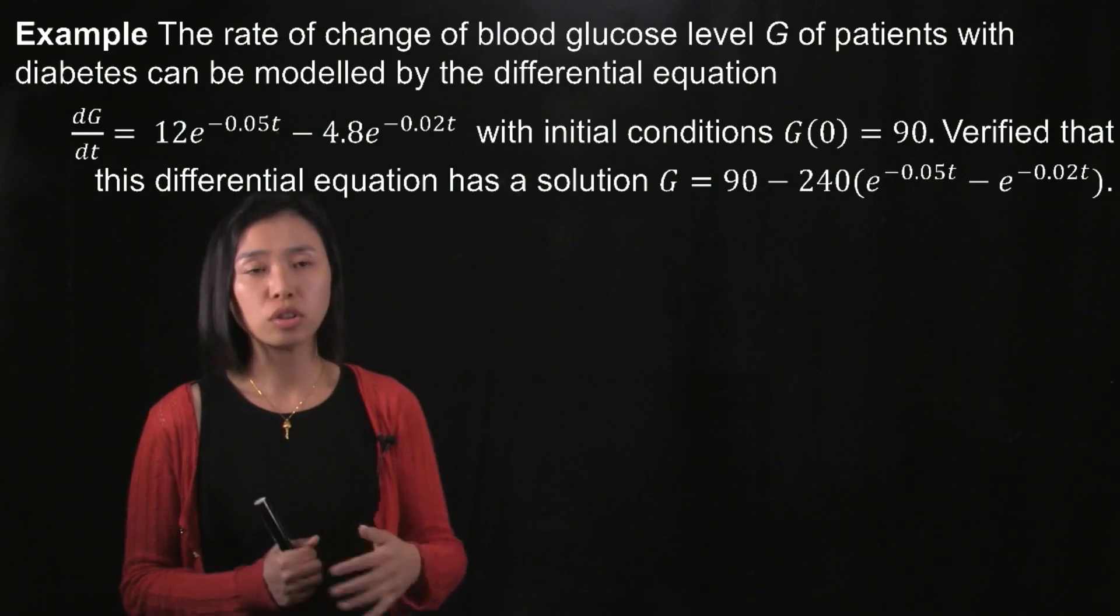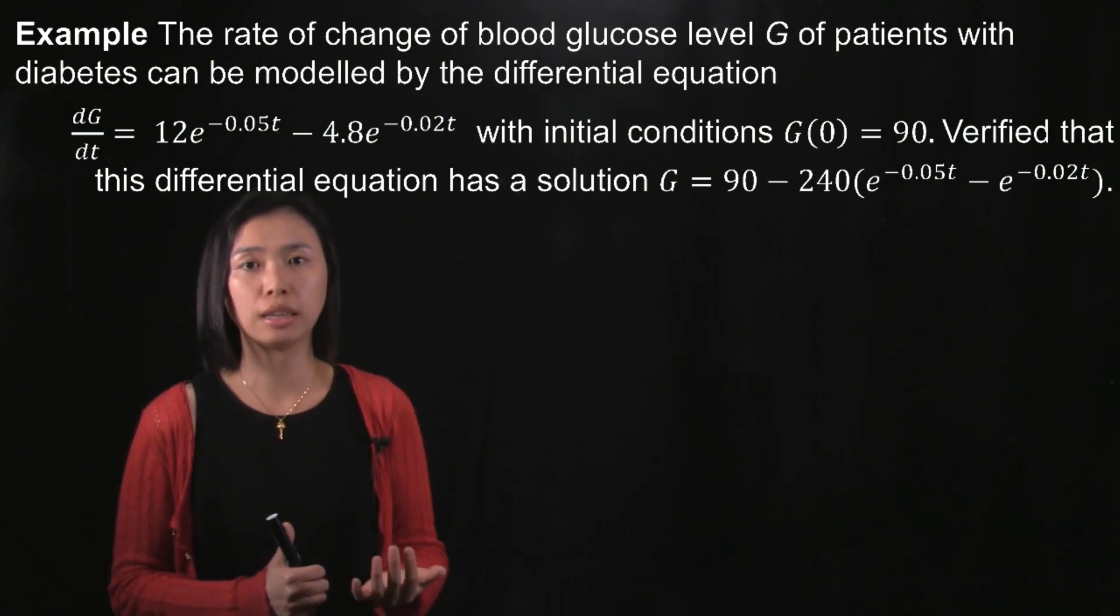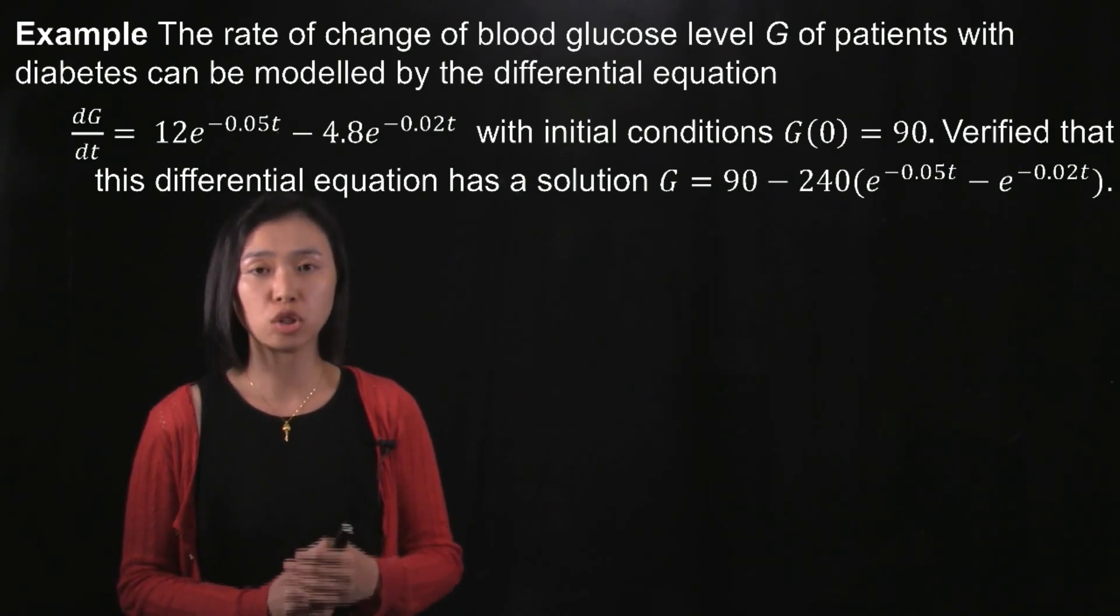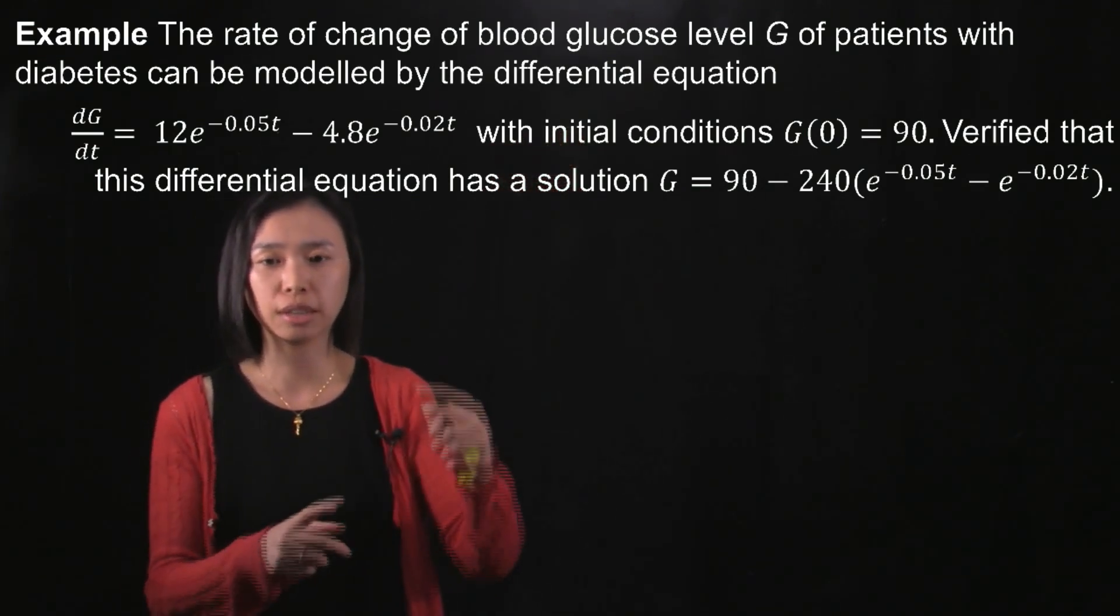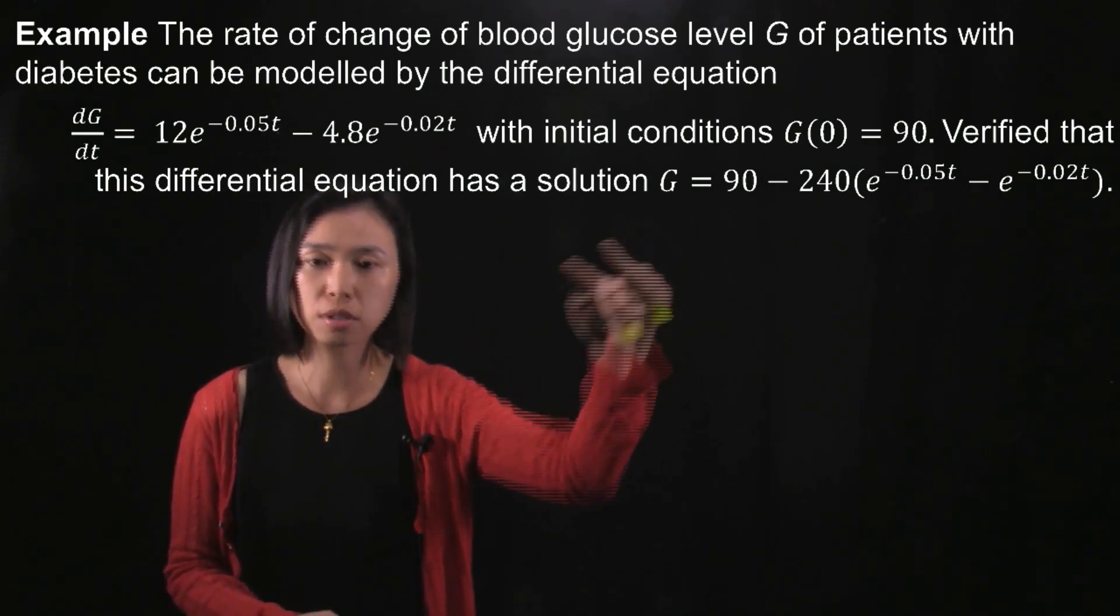The question is about a student who works in a hospital and measured the blood glucose level of a patient with diabetes from time to time. Later on he got the data, so you can imagine that he would have different data points.